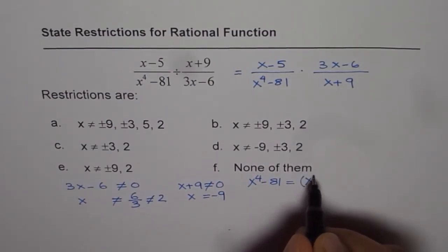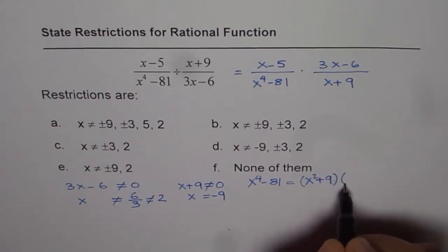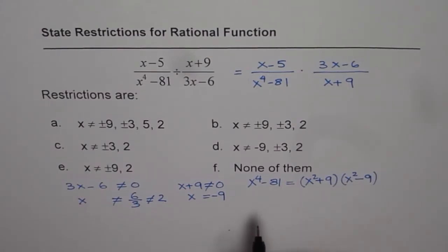Therefore, this can be written as (x^2+9)(x^2-9). That is factoring x^4-81.